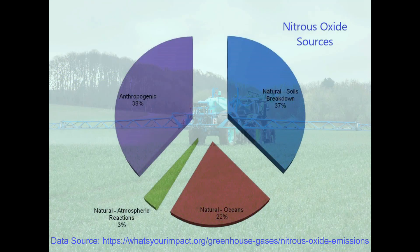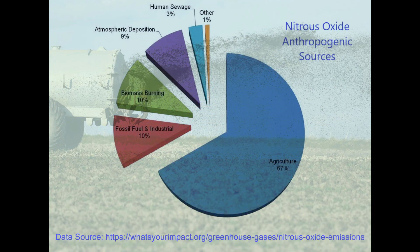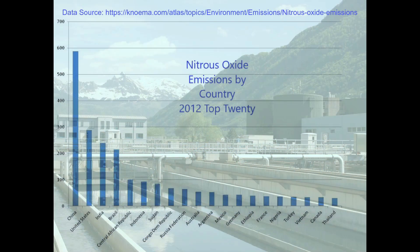Methane emissions by country — top 20 for 2012 — China again was the top emitter, followed by India, Russia, the United States, and Brazil. For nitrous oxide sources: 62% are from natural sources, while 38% are generated through human sources. Natural sources are from soil breakdown at 37%, oceans at 22%, and atmospheric reactions at 3%. The greatest source of human nitrous oxide is from agriculture at 67%, followed by fossil fuel and industrial use at 10%, biomass burning at 10%, atmospheric deposition at 9%, human sewage at 3%, and 1% other. Nitrous oxide emissions by country — top 20 for 2012 — China in first place, followed by the United States, India, Brazil, and the Central African Republic.